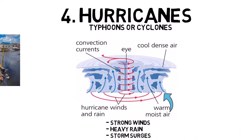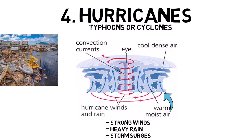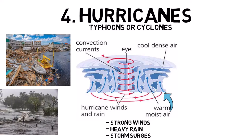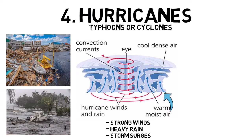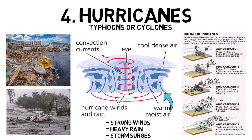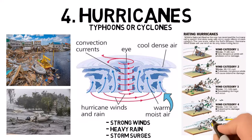Hurricanes can cause widespread flooding, damage to buildings and infrastructure, and loss of life. The most dangerous aspect of a hurricane is the storm surge, which can inundate coastal areas and lead to significant flooding. Hurricanes are categorized by their wind speeds, with Category 5 hurricanes being the most severe.